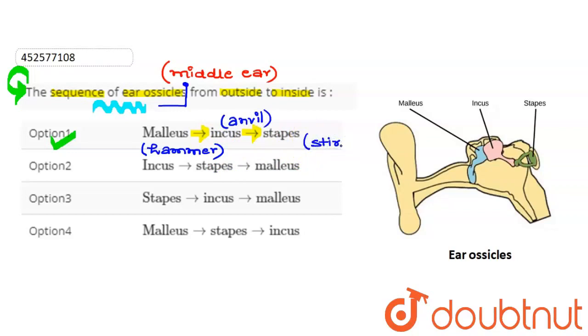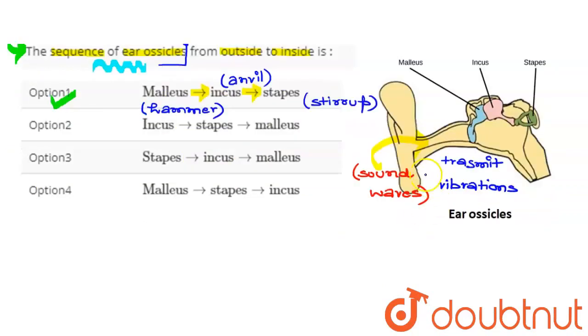Now, these are our ear ossicles. If we see their major function, these three form a short chain which crosses the middle ear. Right, you can see here I have an ear ossicles diagram.